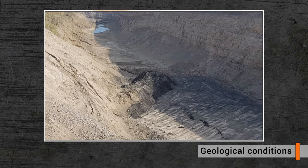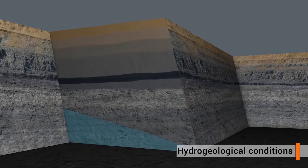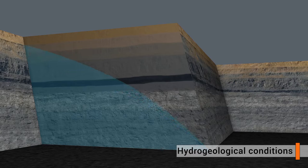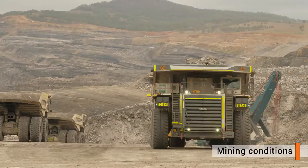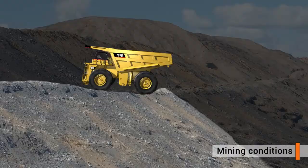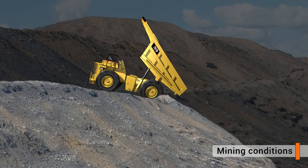Hydrogeological conditions contributing to failure include an increase in water pressure as a result of groundwater flow or blockage of groundwater flow behind the slope face, and ponding of water on the crest or at the toe of an excavated or dumped slope. Mining conditions contributing to failure include dump tip heads formed from highly weathered or saturated waste material, and dump tip heads dipping towards the dump crest where the additional weight applied to the tip head crest when a truck reverses to dump its load can initiate a failure.